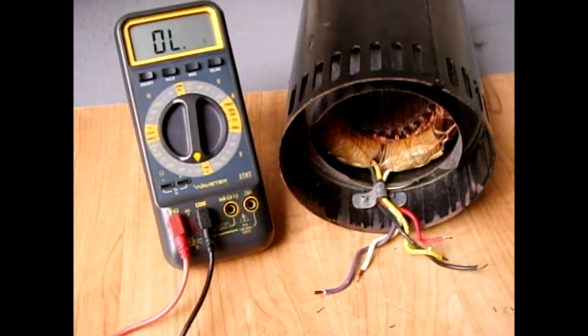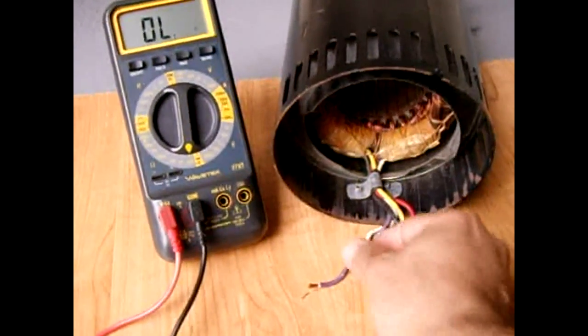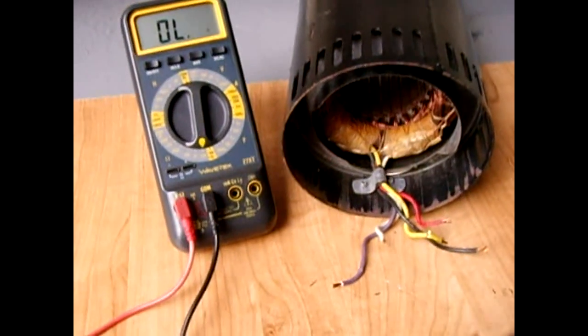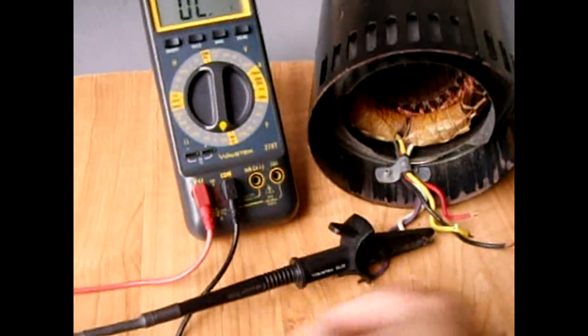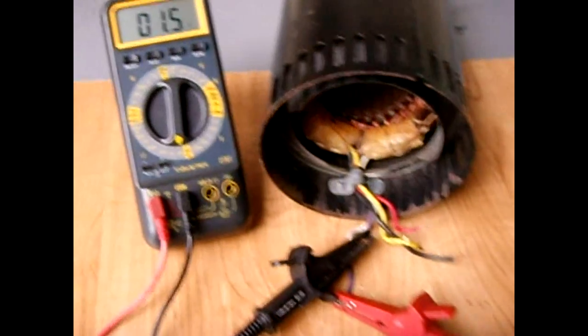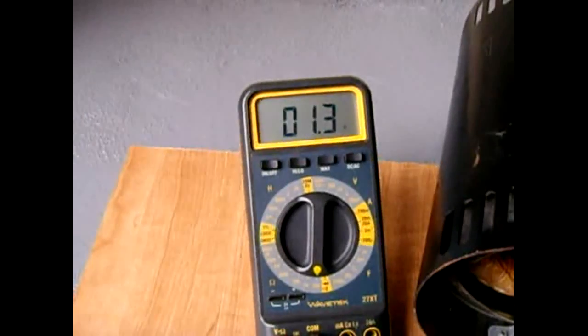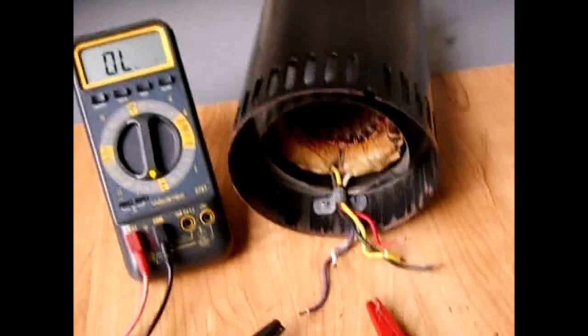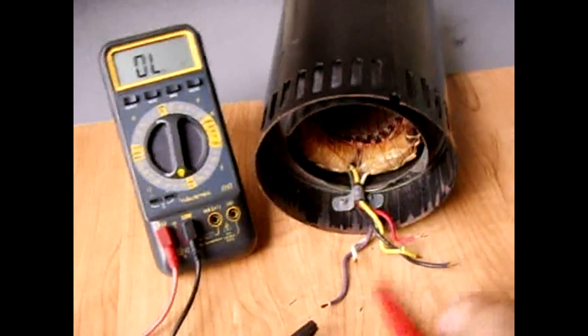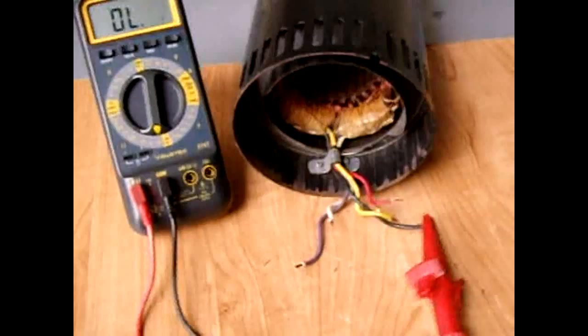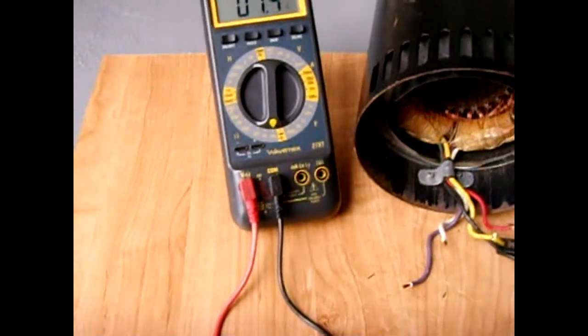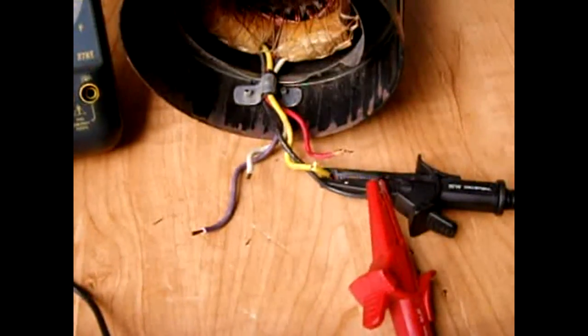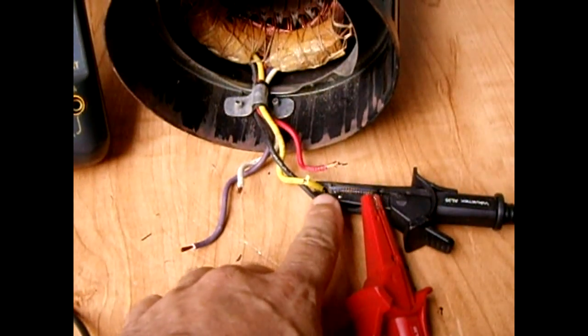All right, so we're going to test the windings. We're going to check the main winding first. This is one side of the main winding right here, white and purple. That's right around 1.2. Other side of the main winding right here, and that is also 1.2. So by doing these measurements you can see black and yellow is at 1.2 ohm, purple and white 1.2 ohm. Clearly identify the two windings.